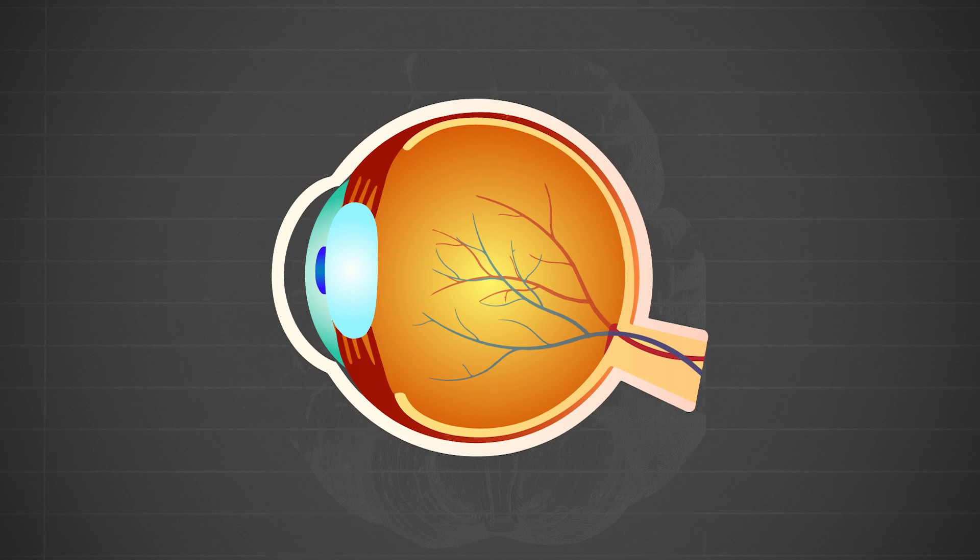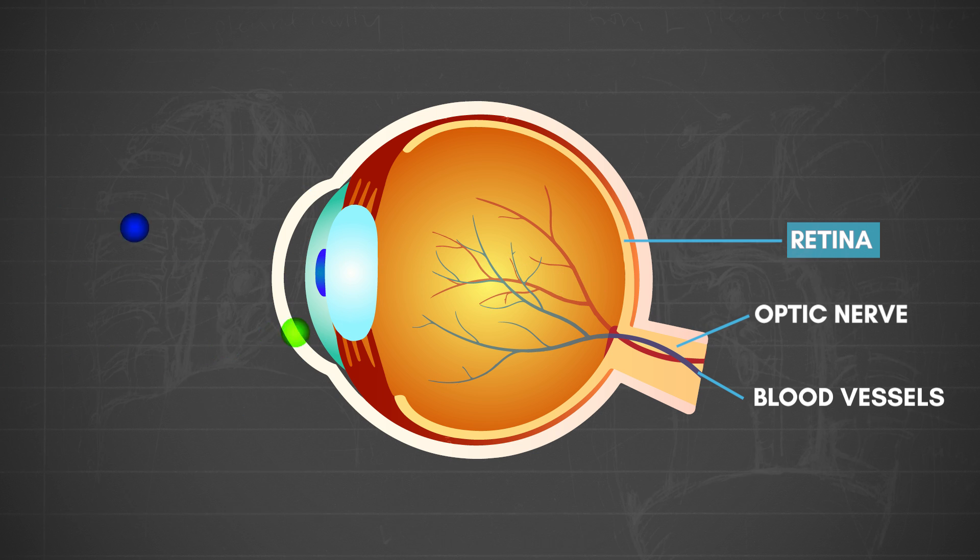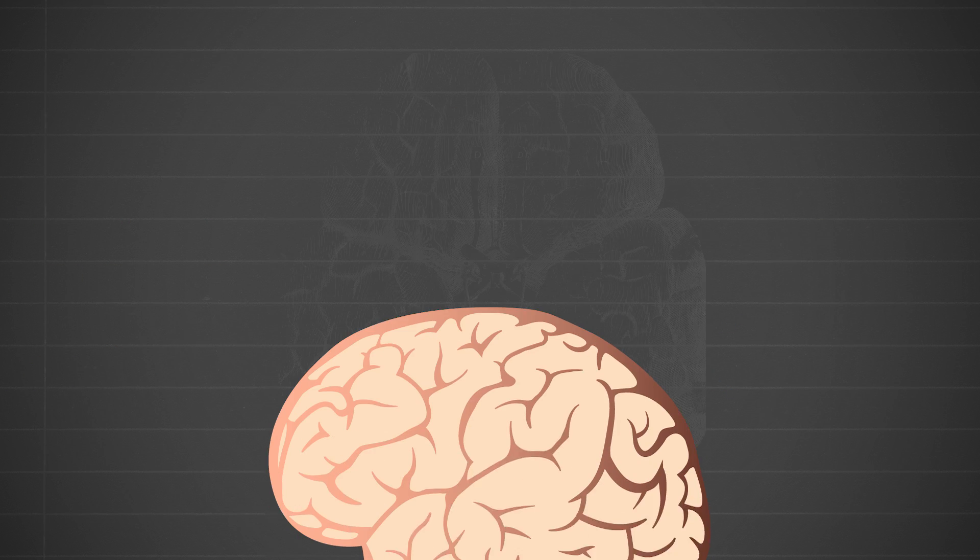When our eyes are open, the light-sensitive layer of cells at the back of our eyeballs, called the retina, are bombarded by packets of light energy called photons. The photons that represent visual light trigger nerve impulses on the retina that pass via the optic nerve to the brain where a visual image is formed.